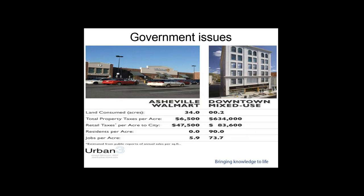The relative benefit from government's perspective is clear: the traditional Frank Lloyd Wright model uses 34 acres with total property taxes of $6,500, retail taxes per acre of $47,100, virtually no residents, and very few jobs per acre. US malls are dying — nobody goes when they can order online. By contrast, downtown mixed-use uses a tiny amount of land, generates huge tax revenues, and creates a massive number of jobs for people living in those revitalized city centres.